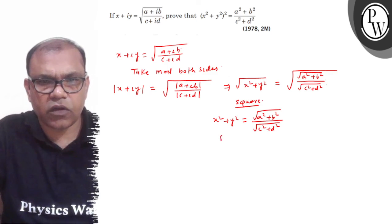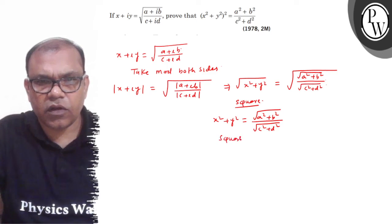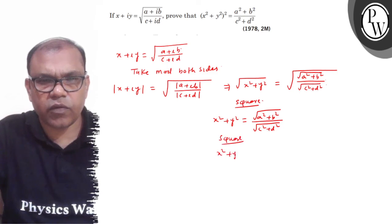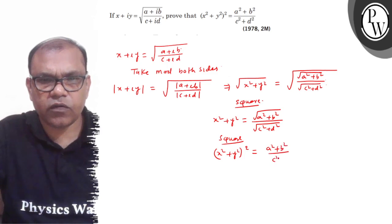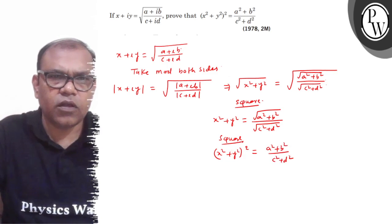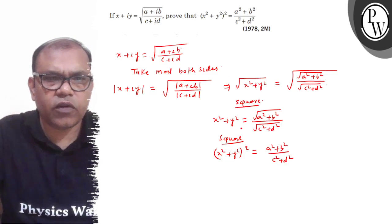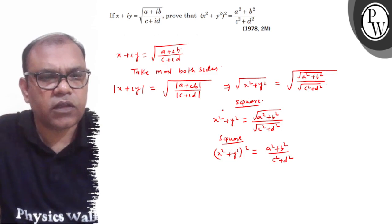Again square karo. Ab dubara is square karo: x square plus y square, iska whole square, this is equals to a square plus b square upon c square plus d square. Yehi aapko proof karna tha. I hope you understood well. Thank you.